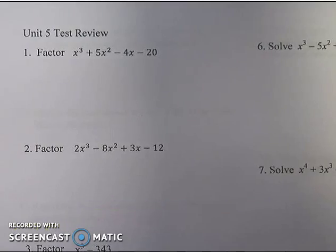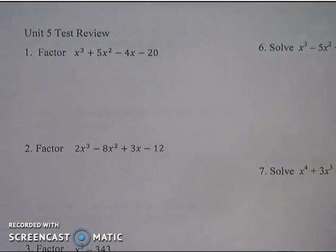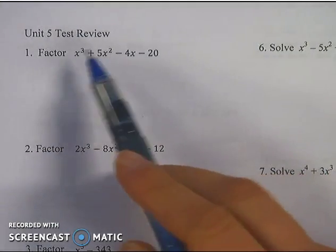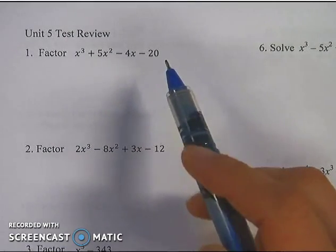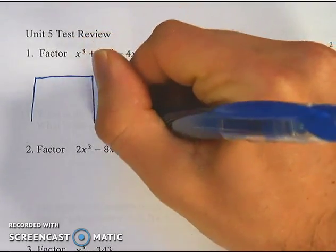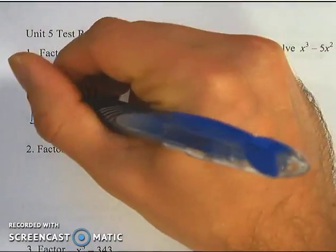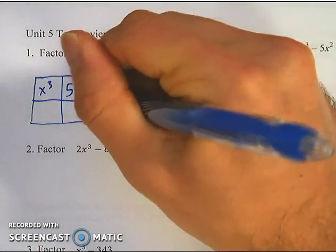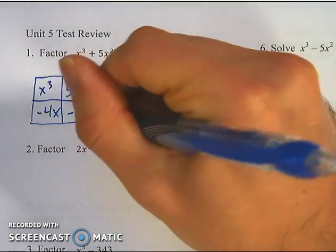First question says factor x cubed plus 5x squared minus 4x minus 20. The first thing you should always do when you're factoring is take out the greatest common factor. And right here, I'm not seeing a greatest common factor other than 1. So I'm going to jump right into the box. I'm going to draw myself the box, and I like to write the terms directly into the box.